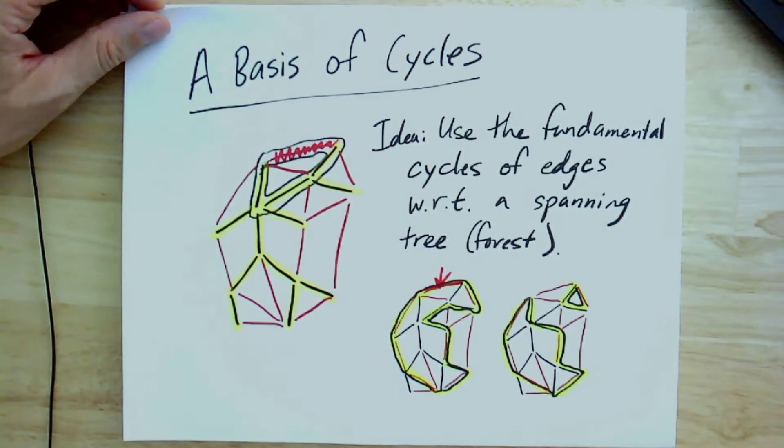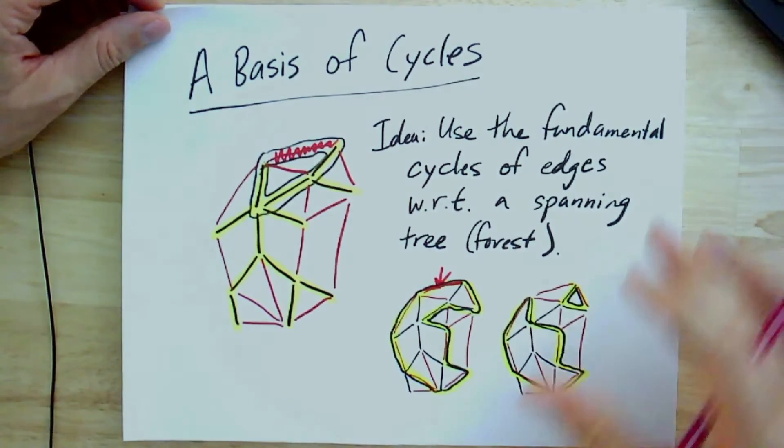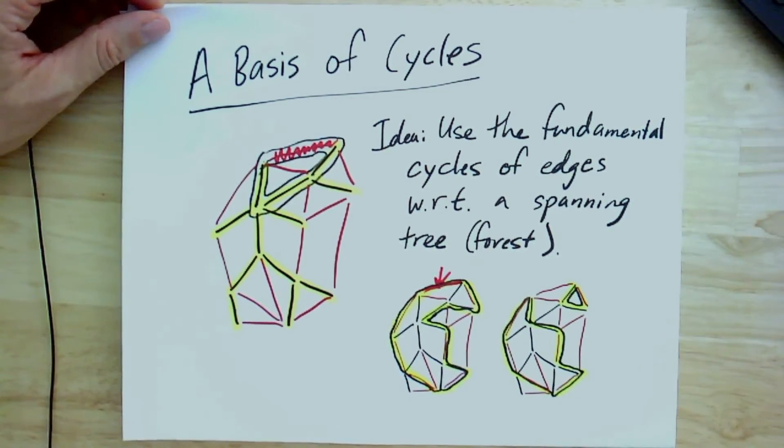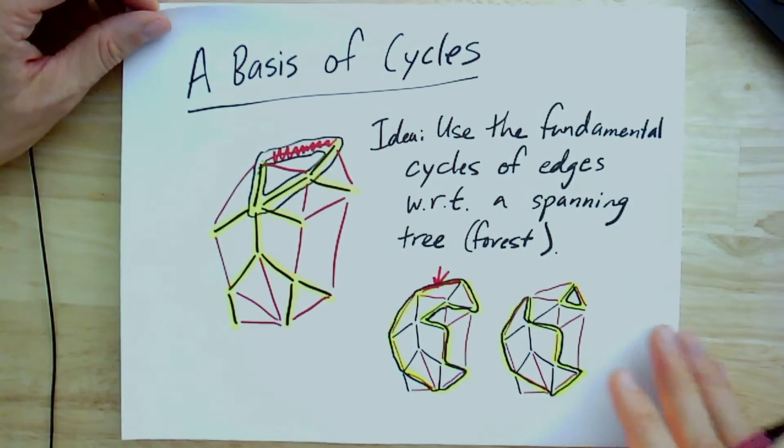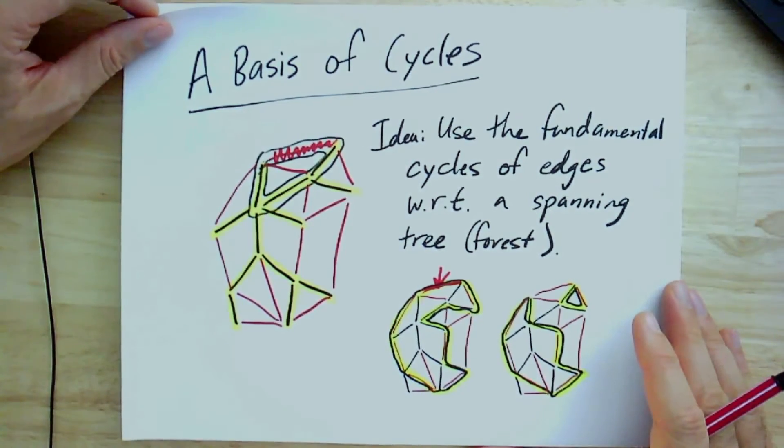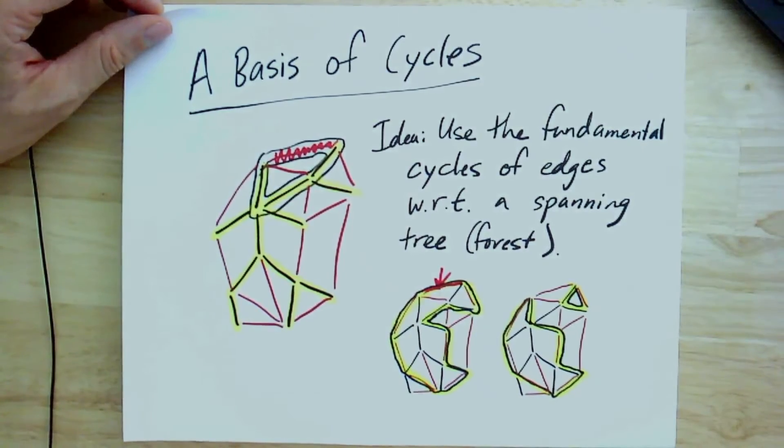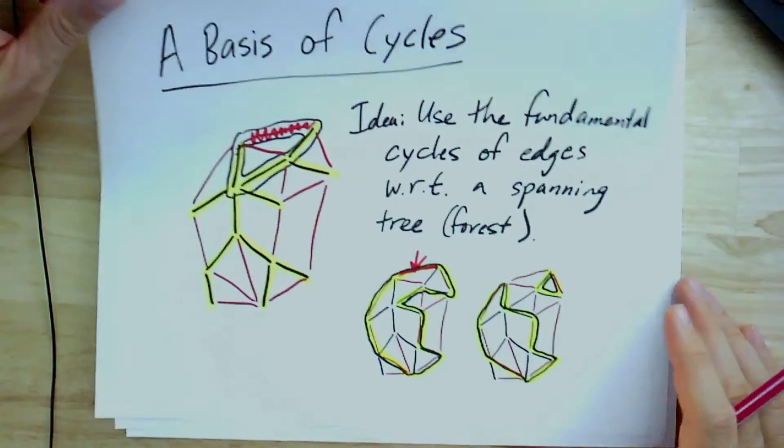So this is a way you can kind of decompose any cycle as the sum of fundamental cycles for a given spanning tree. And this shouldn't be surprising that in any vector space, you can find many different bases. So in this case, for any spanning tree, this gives you a basis. It also tells you something about the size.